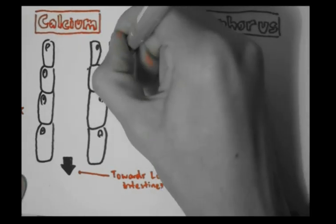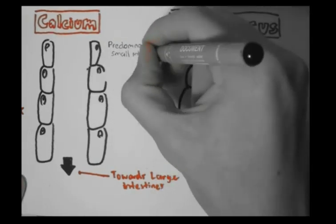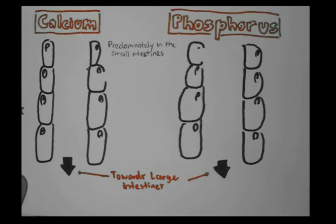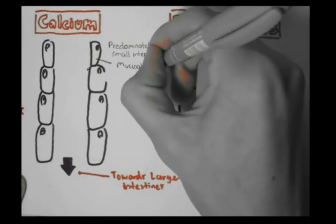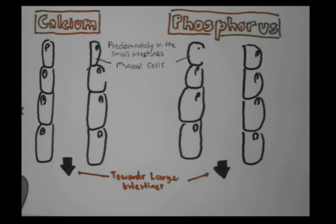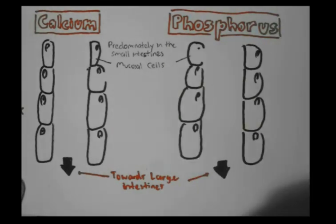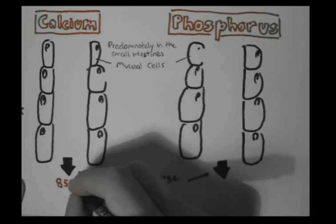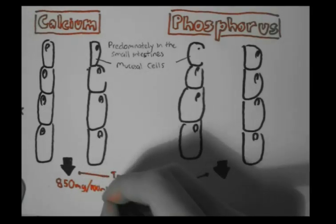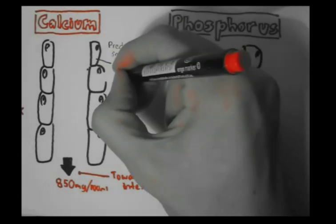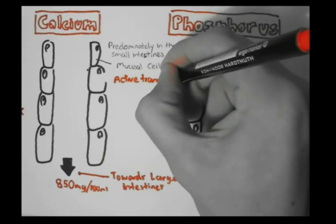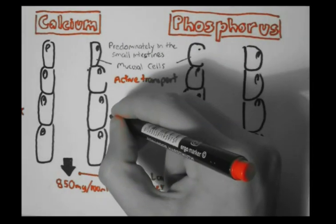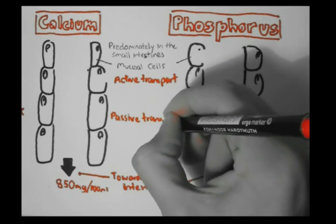What absorbs calcium and phosphorus molecules within the intestines are special cells called mucosal cells, which are a type of epithelium cell. We have learned that about 850 mg per 100 ml of calcium is excreted as feces daily. Calcium is absorbed by the small intestine via two processes: active and passive transport.